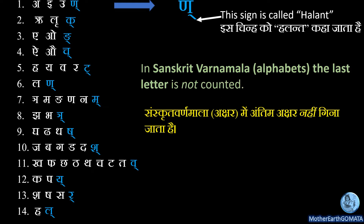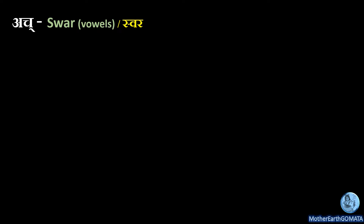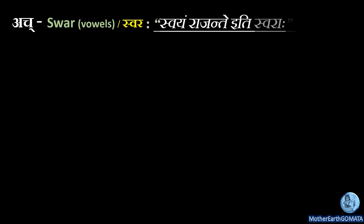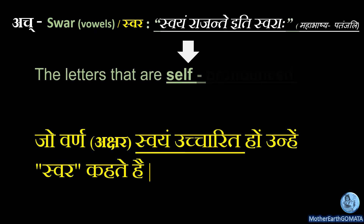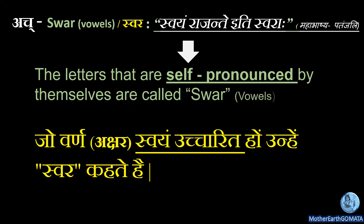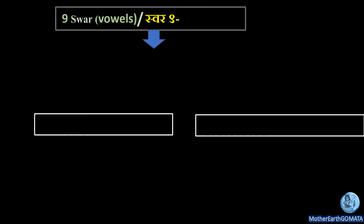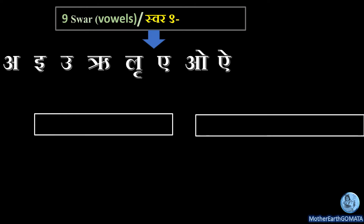Why these last letters are not counted, I will explain in the Pratyahar video. Let us understand what is 'Swar', that is vowels. In Sanskrit, Swar is known as 'Ach'. 'Swayam rajante iti Swara' — meaning the letters that are self-pronounced by themselves are called Swar. That is, the letters that do not require help of any other letter for their pronunciation are called Swar. Swar are self-sufficient and independent in their pronunciation. There are nine Swar in Sanskrit Varna Mala: A, E, U, R, L, A, O, I, O.